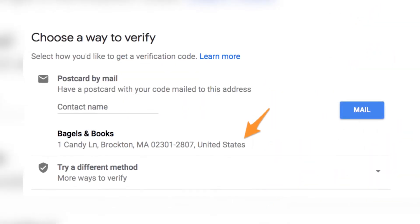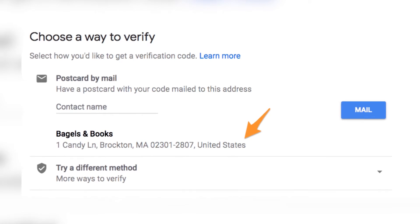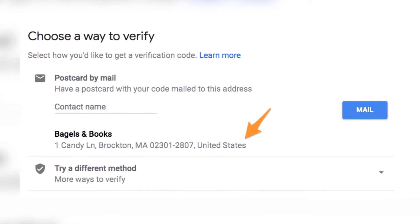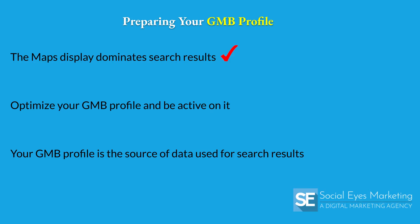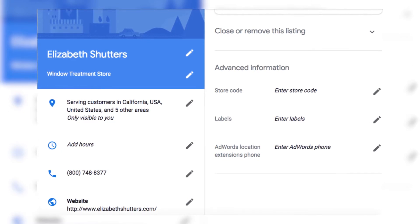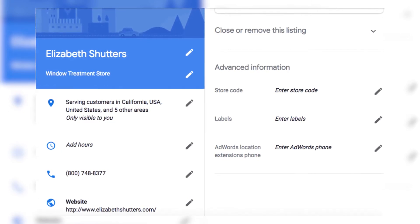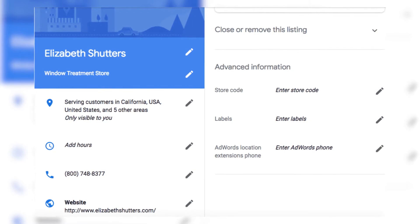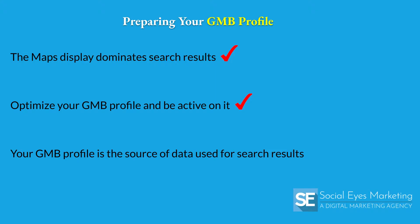If you're a new business or just haven't claimed your listing yet, you should do so now. But simply claiming it and verifying ownership isn't enough. You need to optimize it and continue to be active in order to reap the full benefits. Take advantage of every character space available — if Google gives you an opportunity to include a piece of information about your business, include it. This is the source for local business data that Google uses for its local search algorithm.